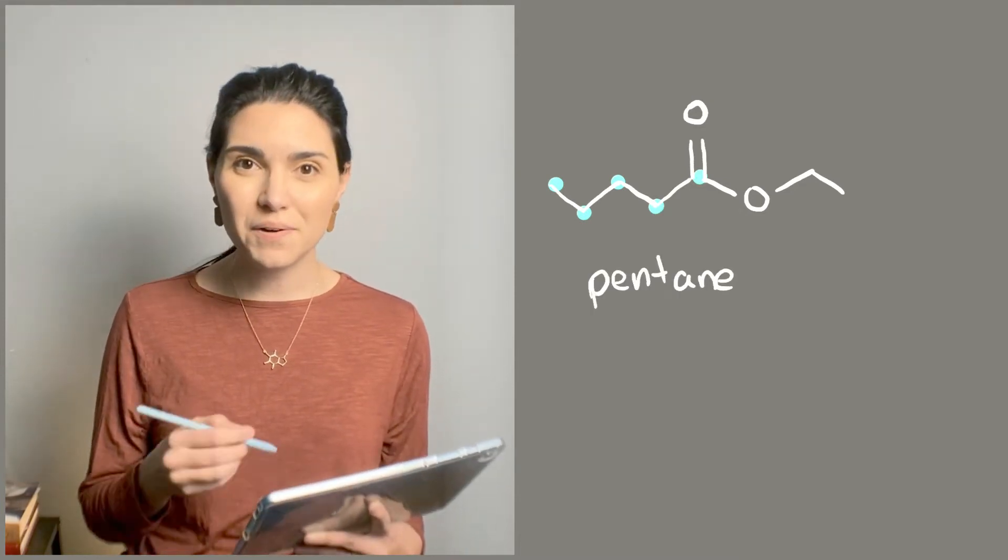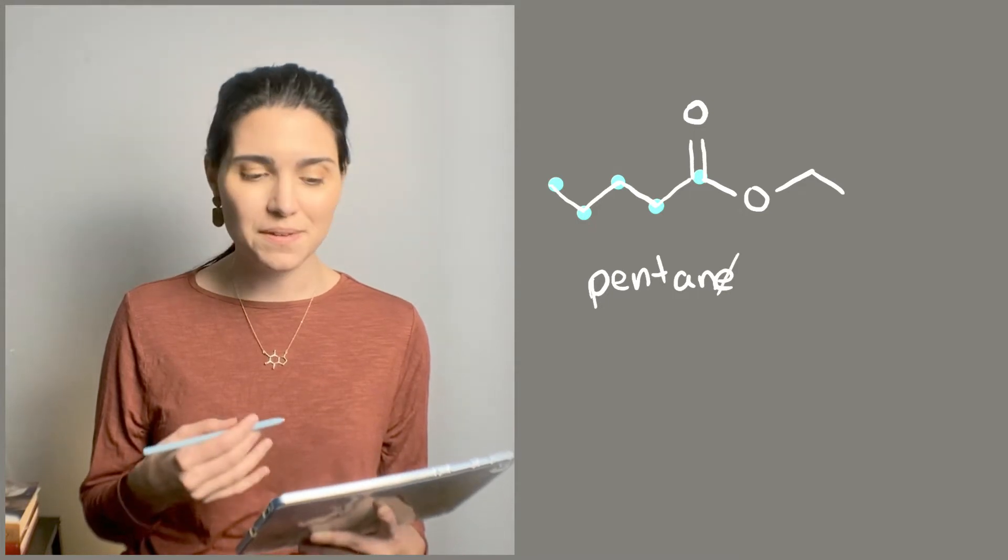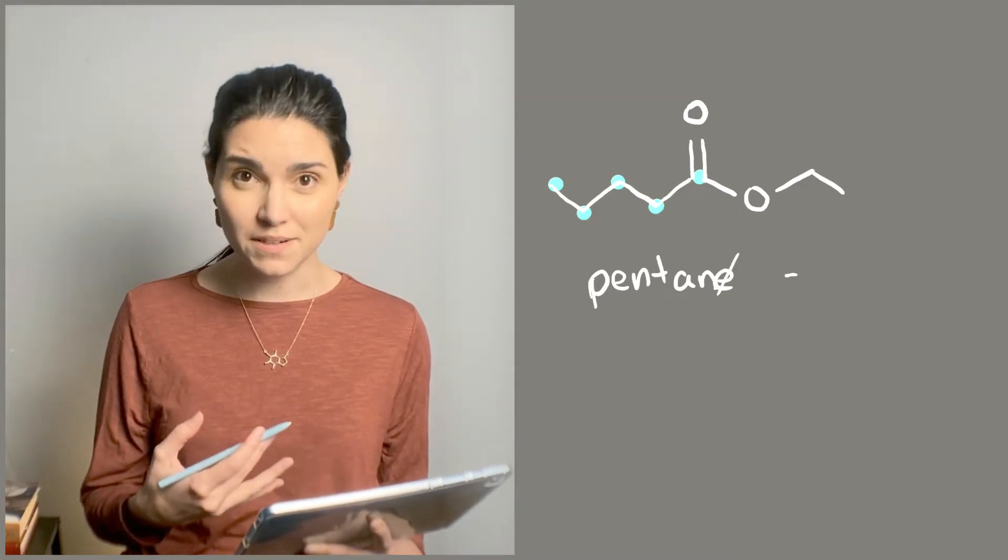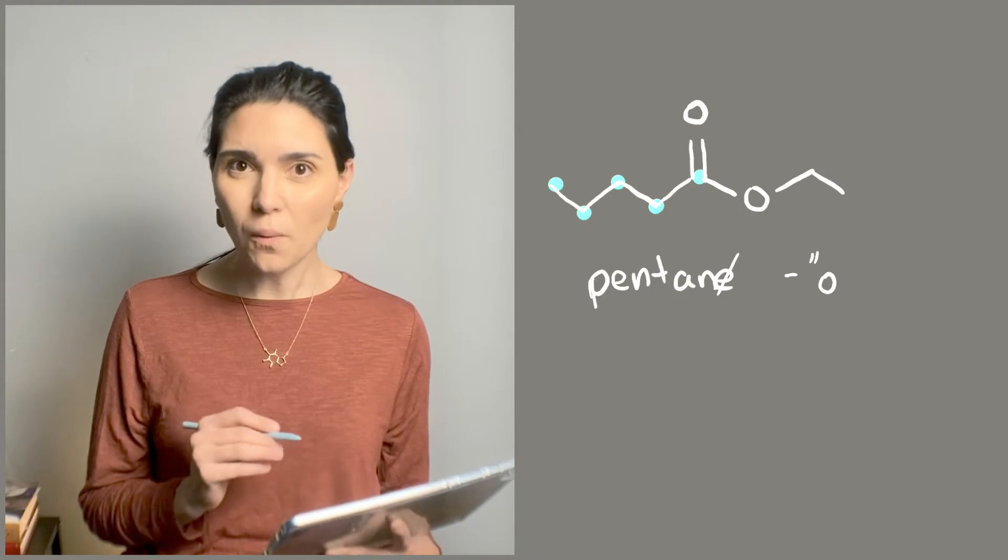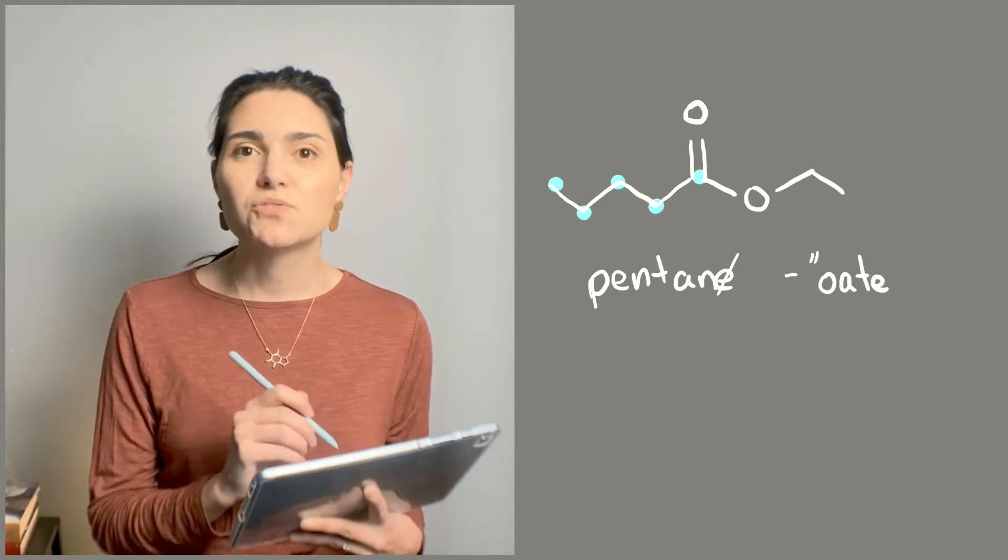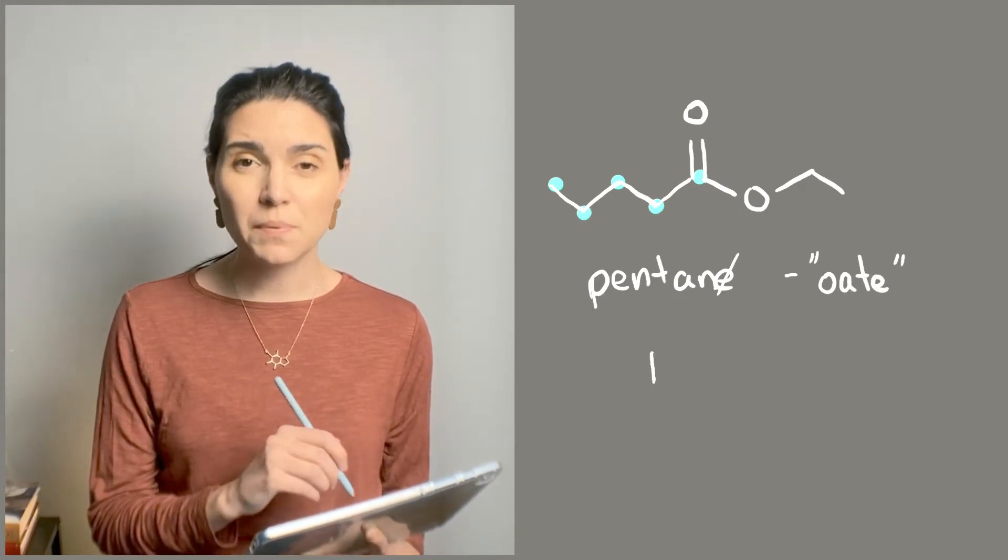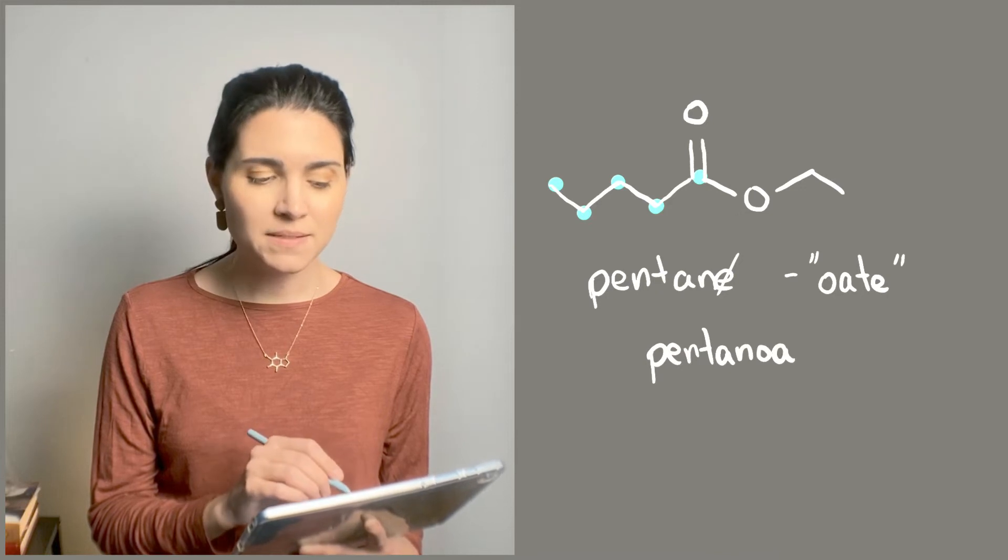The next step is to add the correct functional group ending to the name. So the ending for an ester is oate, O-A-T-E. We're going to drop the E from pentane and then put these pieces together to get pentanoate.